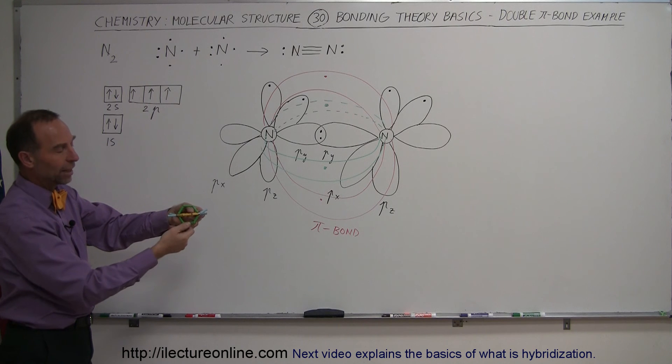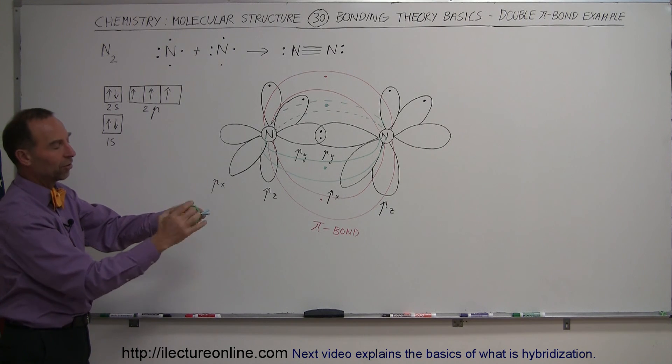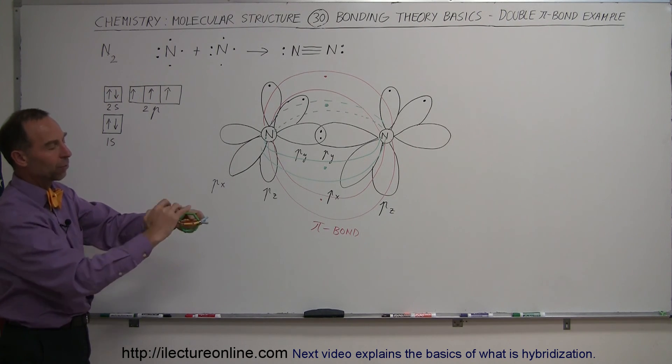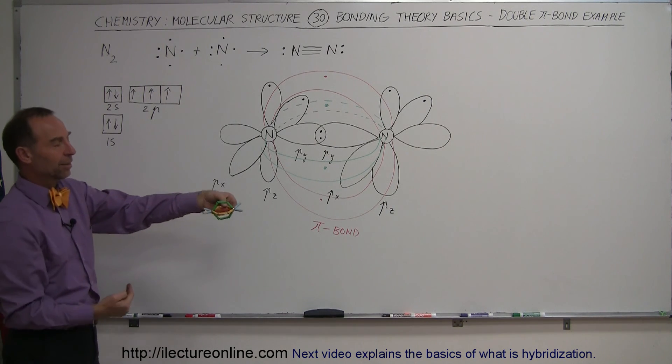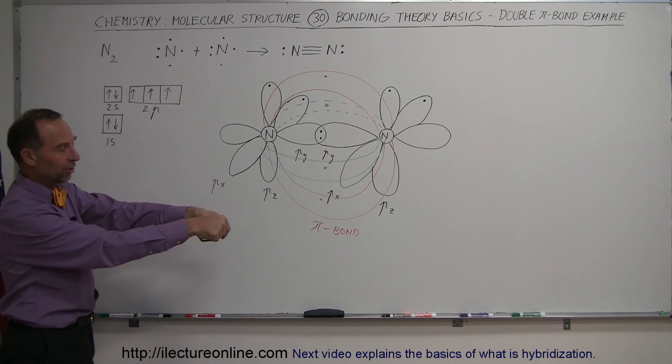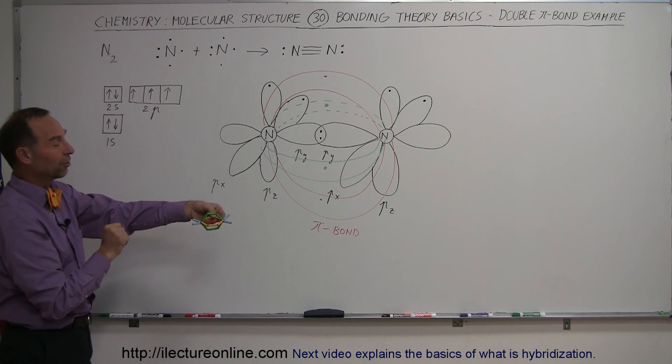So you see, that is what a triple bond structure looks like: one sigma bond in the center with two pi bonds - one above and below, and one in front and behind the molecule like that. These here represent the two lone electron pairs on each of the nitrogen atoms.